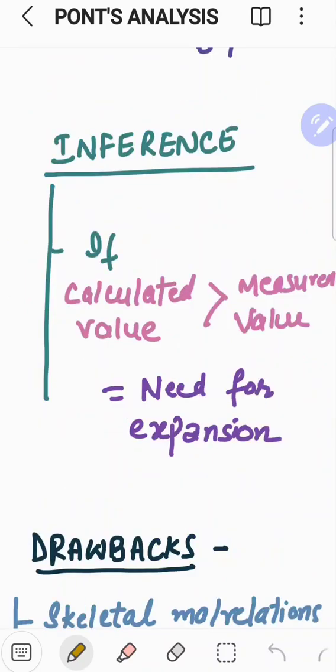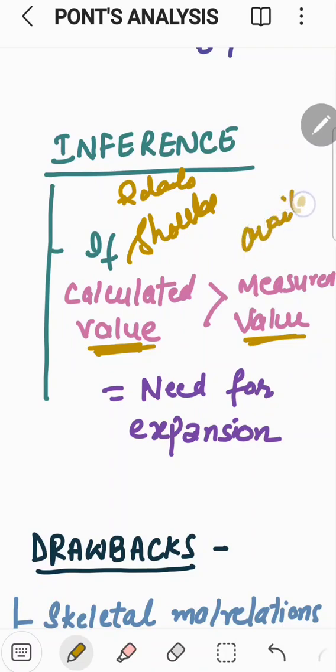From both the measured and the calculated values, the inference is made. It said that if the calculated value is greater than the measured value, calculated value means something which should be there ideally. Ideally, what should be the arch width in premolar and molar region to the measured value means something which is available to us. It simply means if the calculated value is more than the measured value, it means there is need for the expansion. And the discrepancy and amount of discrepancy between both the value will tell us how much expansion is needed.